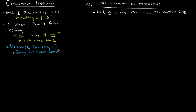Because you can't have the substrate and the inhibitor bind at the same time, once the enzyme binds an inhibitor, it can't bind the substrate — it has reduced affinity for its substrate. We've talked about a particular measure of affinity: Km. If we've reduced the enzyme's affinity for the substrate, the Km increases, because a high Km means low affinity and a low Km means high affinity.